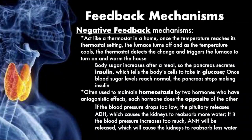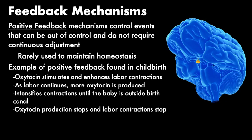Positive feedback is different — it's not a constant up-and-down control of events and not really focused on homeostasis. It's more like: here we have a severe need, so let's provide a certain hormone during this time. A good example is childbirth. Oxytocin is stimulated to enhance labor contractions. As labor continues, more and more oxytocin is produced, which intensifies the contractions until the baby is born. Then the production of the hormone stops, and contractions stop. It's more a time-of-need response to reach a certain purpose — not an up and down.